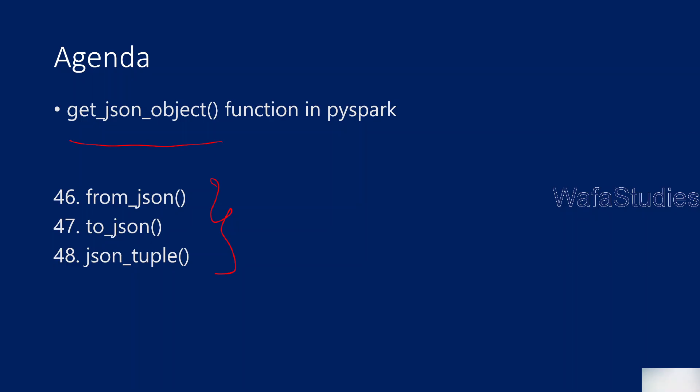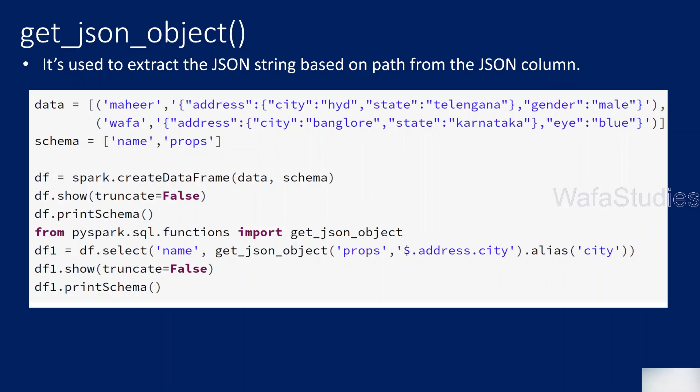This function will help you when you are working with JSON strings. Let's say you have a JSON string in one of the columns of a DataFrame and you want to extract a JSON part based upon a node path. For example, if you have a JSON string and you want to take only the gender, or maybe city, or maybe address — based upon the node path you want to take the values — then you can use get_json_object.